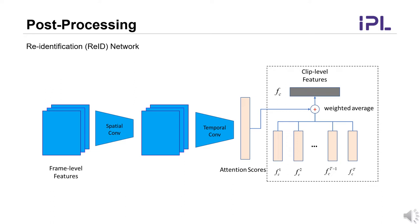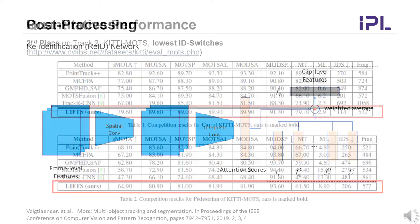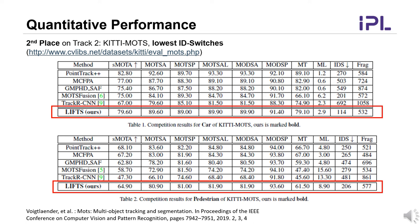A re-identification approach is also adopted to reconnect tracklets due to occlusions or fast motions. We use trajectory-level features in the tracking refinement process. Overall, we rank second place among 16 teams in the CVPR 2020 workshop, Track 2 of the BMTT Challenge: MOD and MOTS.